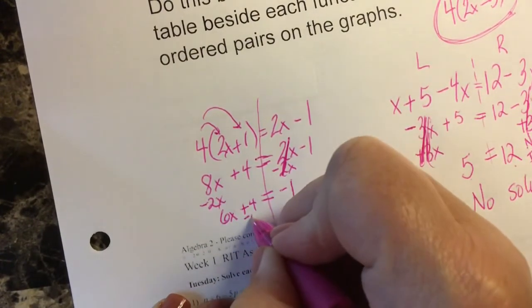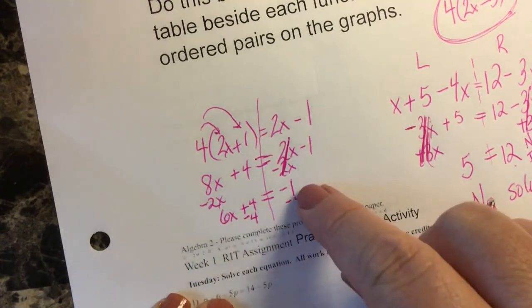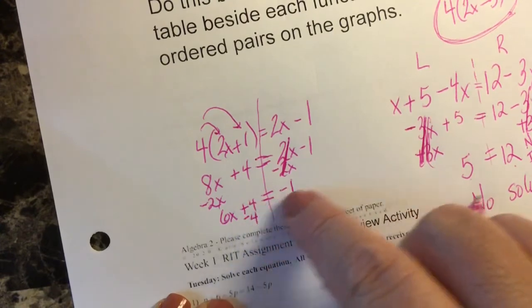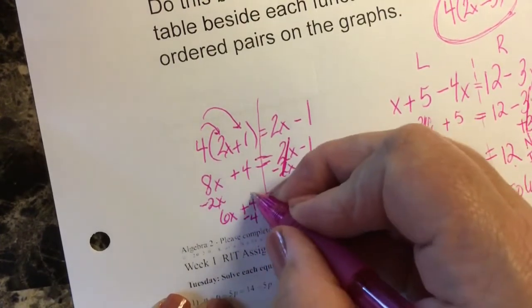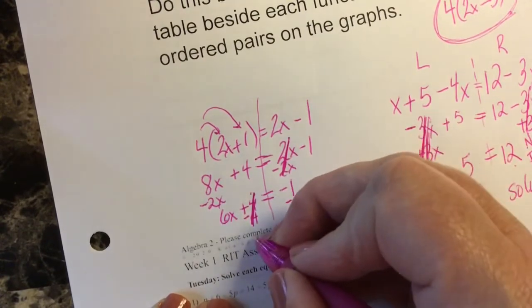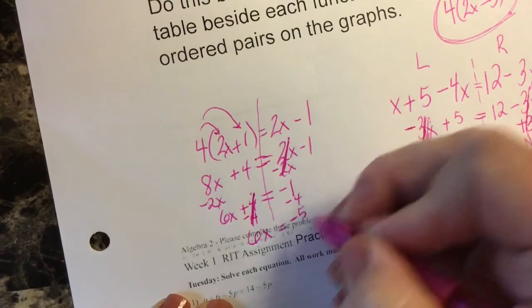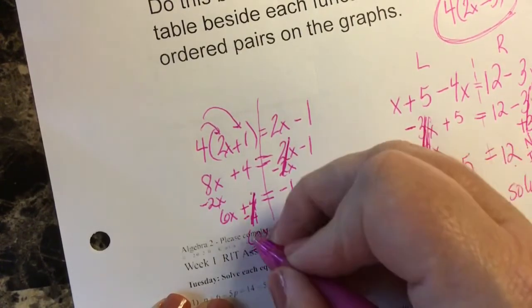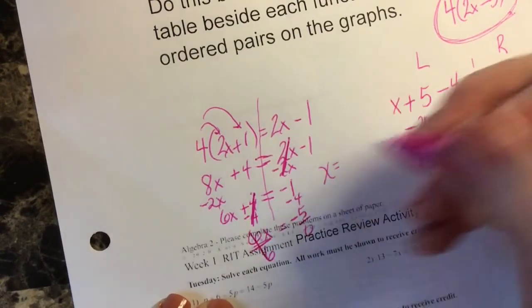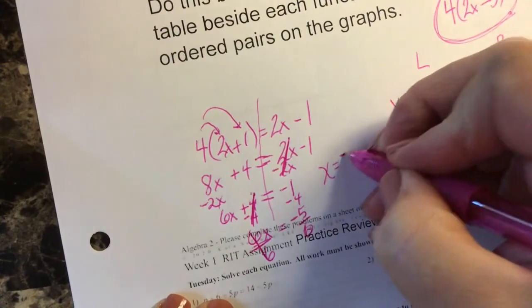Next I'm going to subtract 4 from both sides because my goal is to get the x on one side of the equal sign and my constants, those are the things without the variables, on the other side of the equal sign. So I've removed the 4 from the left hand side and I have 6x equals negative 5. Now I need my x alone, divide by 6. So x is going to equal, does negative 5 divide by 6? No it does not.